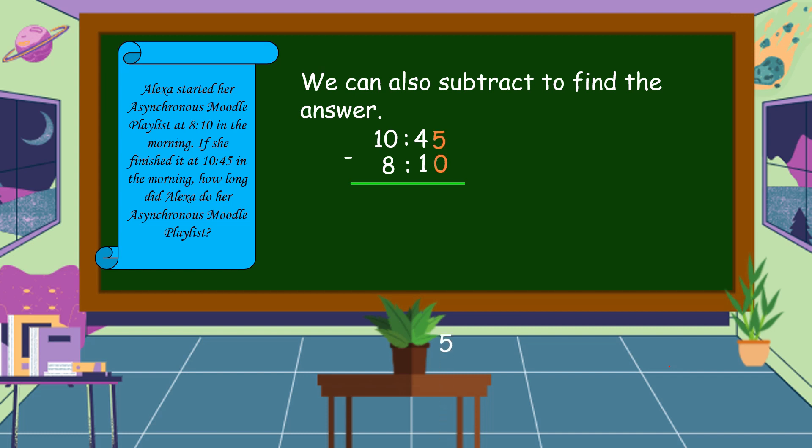5 minus 0 is equal to 5. 4 minus 1 is equal to 3. 10 minus 8 is equal to 2. Copy the colon sign. This colon sign separates the hours from minutes. Therefore, Alexa did her asynchronous Moodle playlist for 2 hours and 35 minutes.